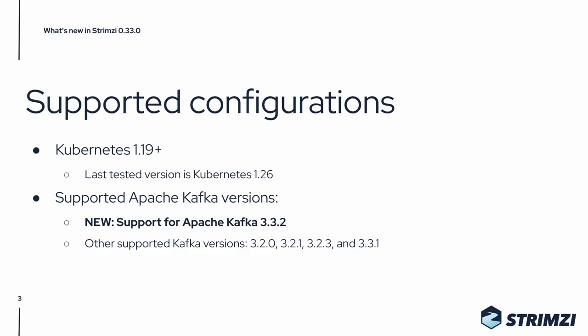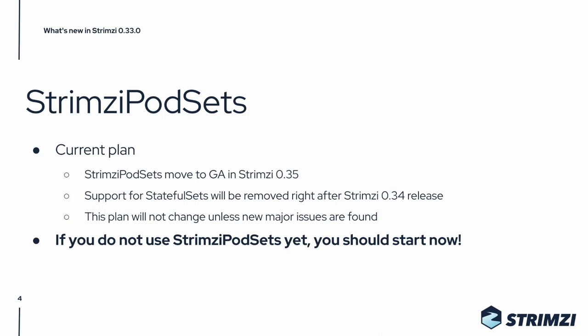Before we move to the new features, let's talk briefly about the Strimzi pod sets and the current plan for their graduation. The plan is that Strimzi pod sets will move to GA in Strimzi 0.35, and support for stateful sets will be removed right after the Strimzi 0.34 release. This plan is not expected to change unless we find some new major issues, so if you are not using Strimzi pod sets yet, now is the highest time to start.